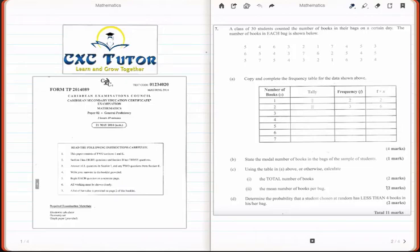Welcome everyone. This is Kevin from CXCTutor. I'm here with you again with another exam solution from last year's May-June 2014 paper 2. This question is question 7, which is a pretty simple statistics and probability question. Let's get started.